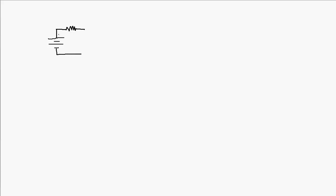I'm going to start off here drawing a portion of a simple little transistor circuit. We've got a voltage source here, and I'm going to draw an arrow through it to designate that it's variable. That voltage source is connected through a resistor to the base of the transistor. I'm going to call this voltage VBB, and I'm going to give this resistor a value of 10 kilo-ohms.